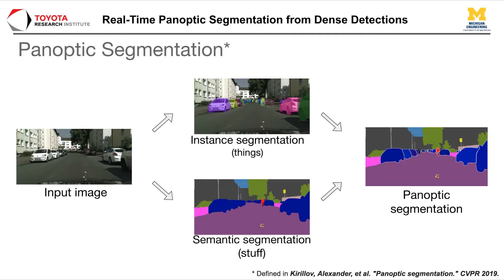Panoptic segmentation is a comprehensive scene understanding task recently introduced to the community. It consists of two subtasks including semantic segmentation for uncountable stuff like sky, and instance segmentation for countable objects like cars.